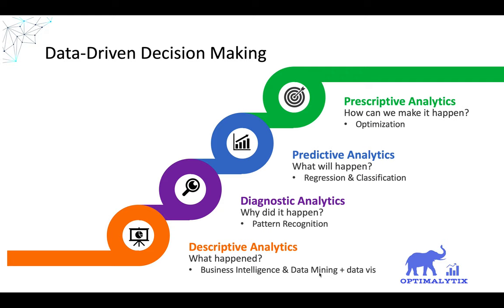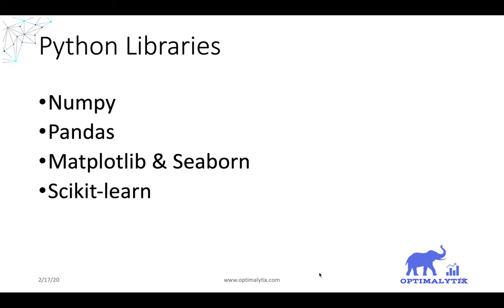Predictive analytics is much broader than just machine learning — it involves various ways to build predictive models. Prescriptive analytics is about recommending decision parameters, which is more advanced and requires optimization on top of predictive analytics.